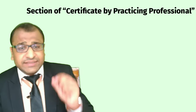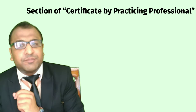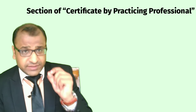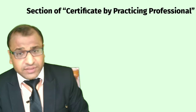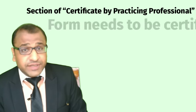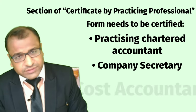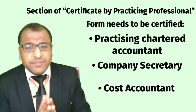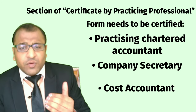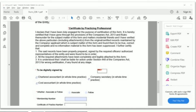Step 10: Finally, the section 'Certificate by Practicing Professional' has been provided, which implies the form needs to be certified by a practicing Chartered Accountant, Company Secretary, or Cost Accountant. This section can only be filled by the professional you are working with, and details such as the nature of profession, membership number, and certificate of practice number must be provided along with attaching their digital signature.